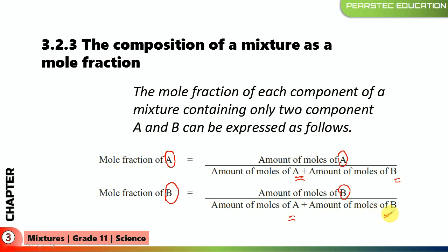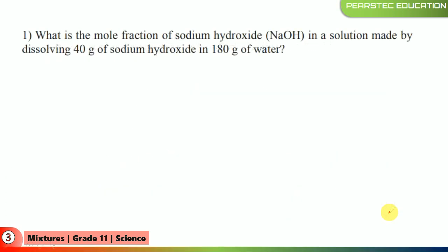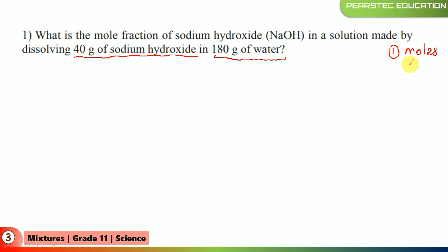Let's see an example: what is the mole fraction of sodium hydroxide in a solution made by dissolving 40 grams of sodium hydroxide in 180 grams of water? To find that out, first of all you want to find out the moles of water and moles of sodium hydroxide. The most important thing is how to find the moles. We want to find out the molar mass of sodium hydroxide and the molar mass of water.